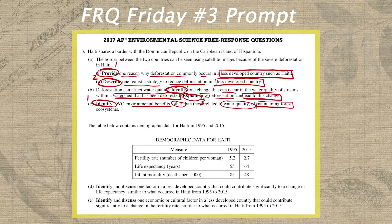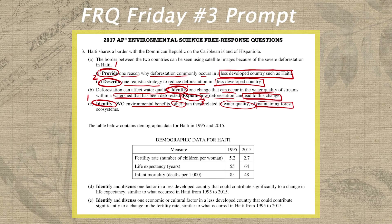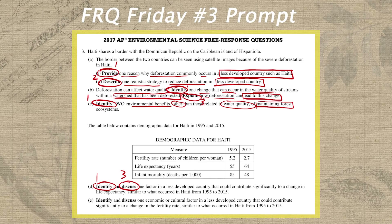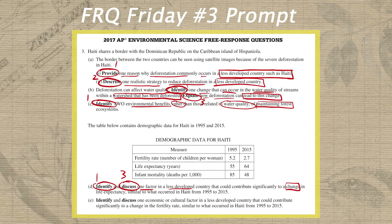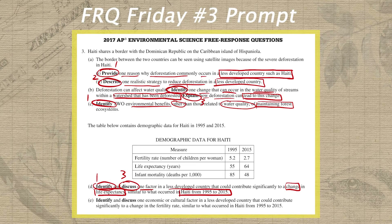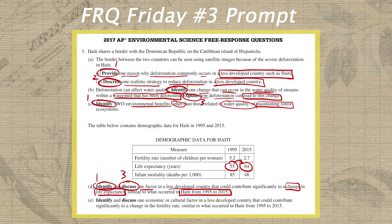In parts D and E, we have a data table with demographic data for Haiti from 1995 to 2015. Both D and E feature identify-and-discuss double prompts, which we treat like two separate mini FRQs. In part D, I circle 'identify' and write a one, then circle 'discuss' and write a three. We have to identify a factor that in a less developed country would contribute significantly to a change in life expectancy similar to what occurred in Haiti from 1995 to 2015. We find life expectancy on the graph for 1995 and 2015, identify a factor, then discuss how that factor led to the change — making sure to link our factor to the increase in life expectancy.